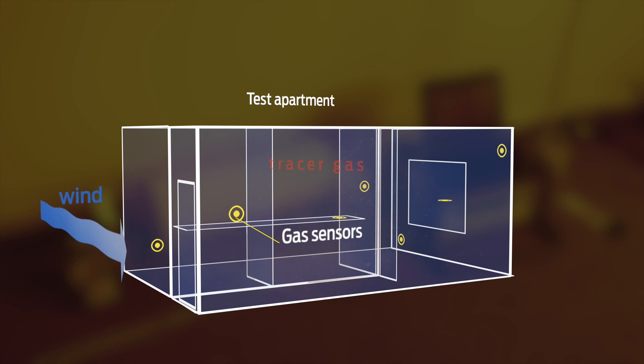We can actually correlate that with the wind speed and wind direction and those kinds of things, and understand how much air we're losing out of the building and how much of the energy lost by the building is due to that air. So we can really get a good handle on what effect these modifications have had to the building.